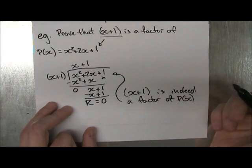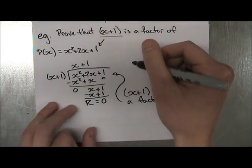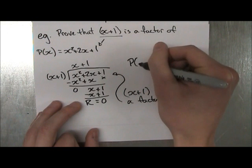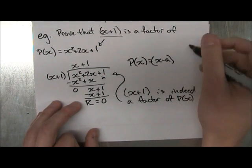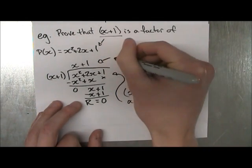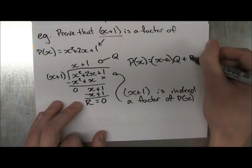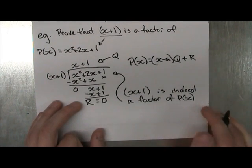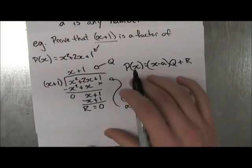There's other ways of proving this that I showed in the previous video, where P(x) is equal to x minus a times q, and this is your q, remember, plus your remainder. So you can use that to help prove it, but this is probably the easiest way. I have one more example.